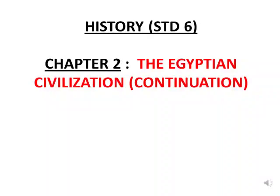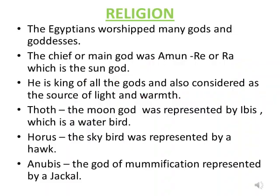Good morning students. Today we will start with History Standard 6 Chapter 2, The Egyptian Civilization. Before going through this slide, let me recall that we have already done the sources, origin, periods, social classes and life of the people of the Egyptian civilization. Now we are going to deal with religion.